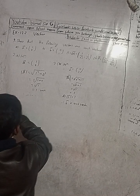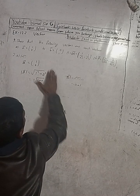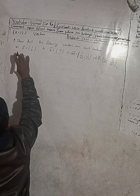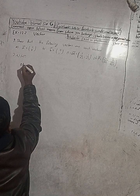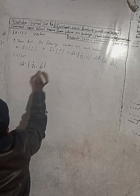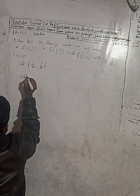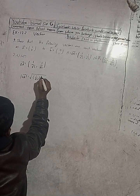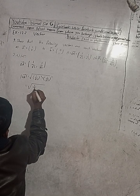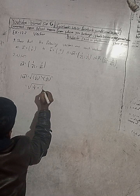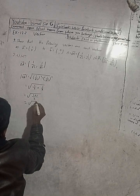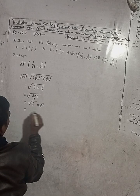Now for part C: vector OA is equal to (1/√2, 1/√2). The modulus of vector OA equals root under (1/√2) squared plus (1/√2) squared. So 1 squared is 1 and root 2 squared is 2, giving 1/2 plus 1/2. This is like a fraction with the same denominator, so 1 plus 1 over 2 equals 2/2, which equals 1, and root 1 is 1 unit.